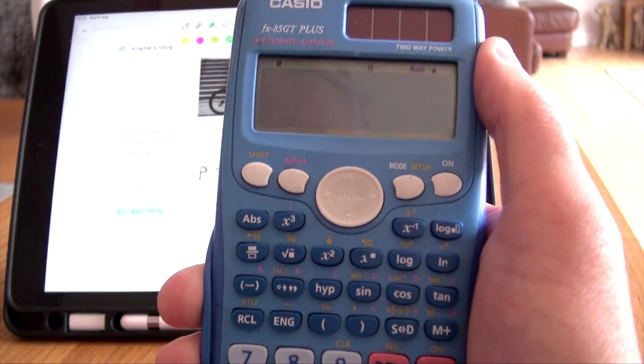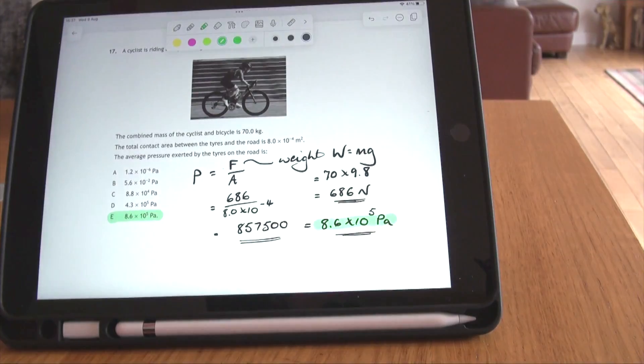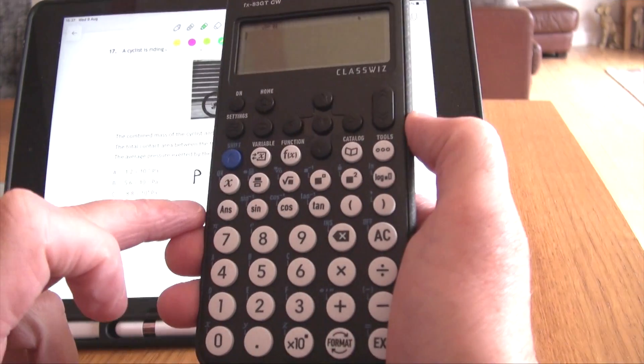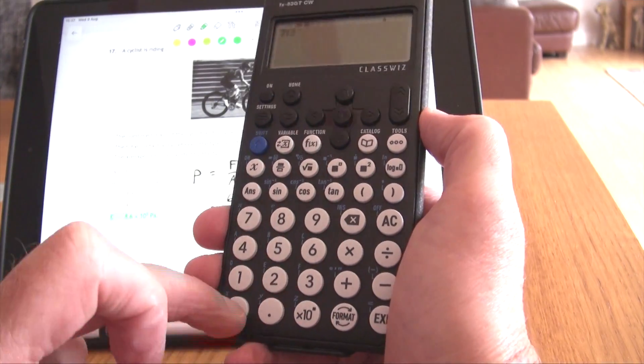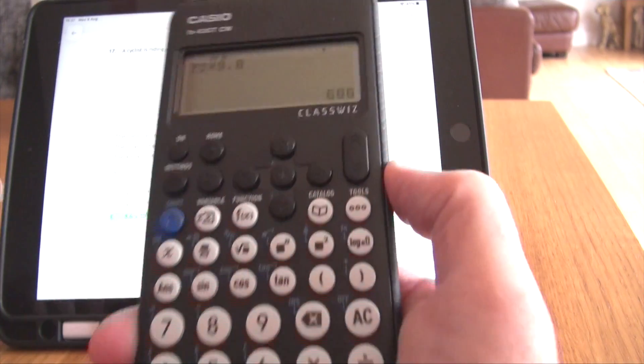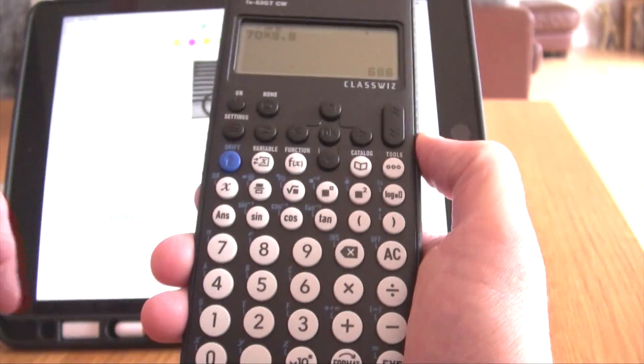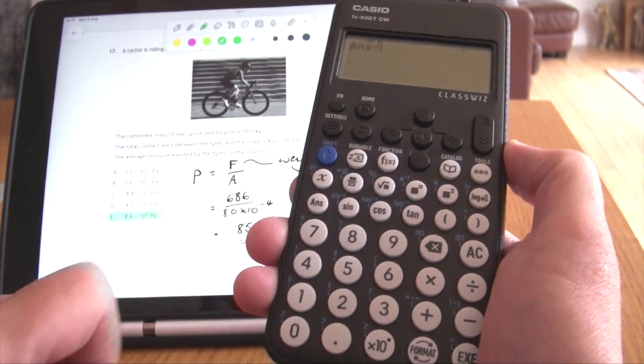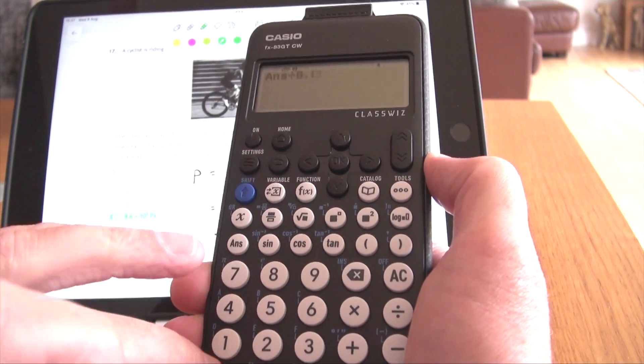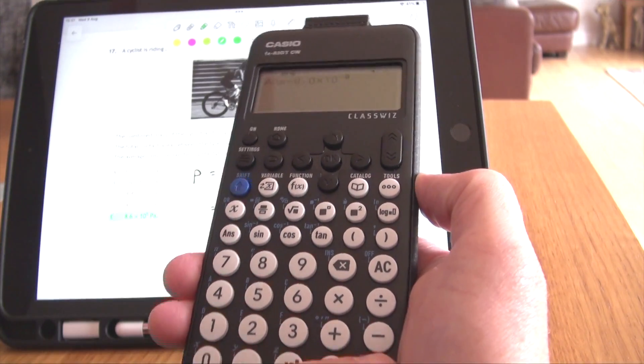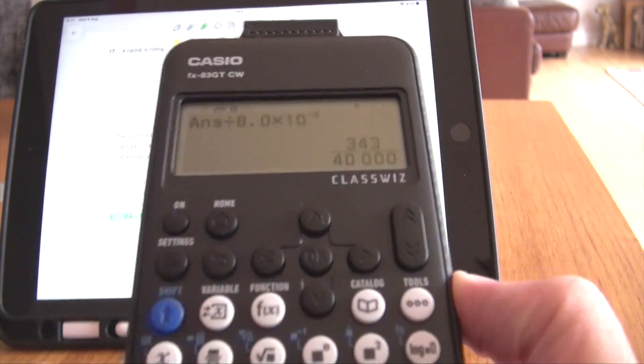But, and here's the big but, wait till you see what happens when we try on this new calculator. So, I need to do 70 times 9.8, that gives me my weight, 686, that's what we want. But then if we press divided by the area, which is 8.0 times 10 to the power of minus 4, execute. There's the answer we get.